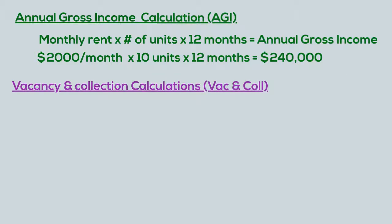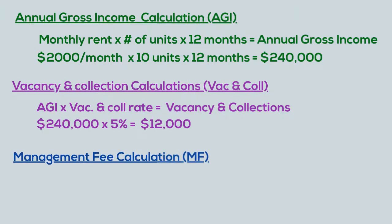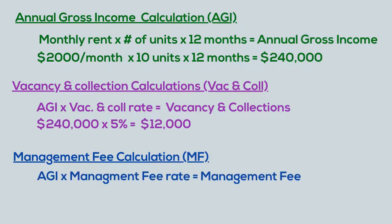Vacancy and collection can be calculated by taking the AGI and multiplying by the vacancy and collection rate. For this problem, it's $240,000 multiplied by 5%, which equals $12,000. The management fee can be calculated by taking the AGI and multiplying by the management fee rate. In this problem, that's $240,000 multiplied by 10%, which equals $24,000.